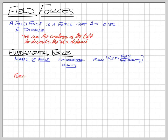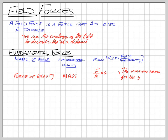Our first field force is the gravitational force. We've used this one a lot. With the force of gravity, we have two masses attracted to each other. Our fundamental quantity is mass. If we want to calculate the field, it's the force of gravity divided by the mass — which we already know is the acceleration due to gravity. So the common name for the gravitational field is acceleration. By fundamental quantity, I mean mass or charge — those are really the only two we're going to talk about.